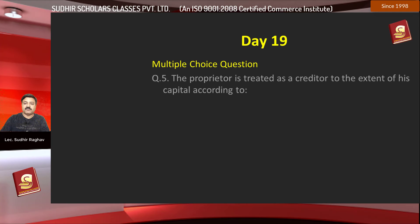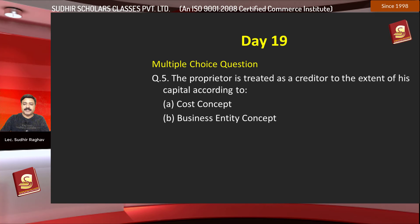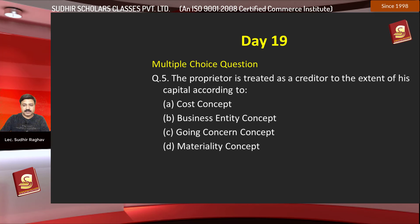Question number five was a multiple choice question: the proprietor is treated as a creditor to the extent of his capital according to — option A: cost concept, option B: business entity concept, option C: going concern concept, option D: maturity concept. So these were our five questions for today.